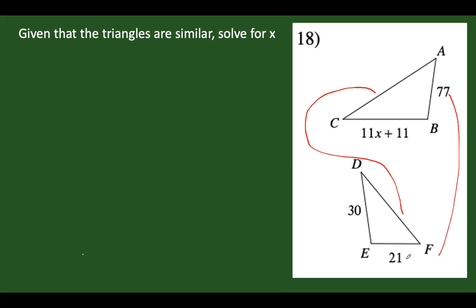So 77 corresponds to 21, and the third side corresponds accordingly. We've now identified the corresponding parts. Since the triangles are similar, their corresponding sides are proportional.